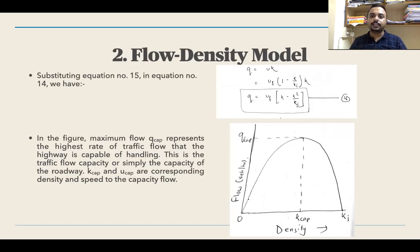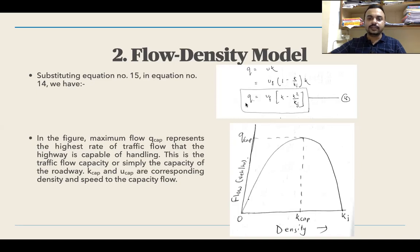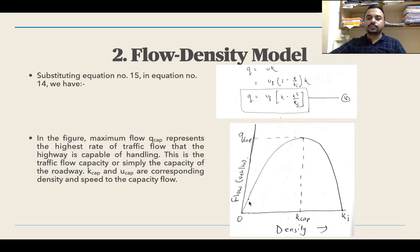For the relation between flow and density, we use the master equation q = u·k and substitute the value of u: u = uf × (1 − k/kj). This gives q = uf·k − uf·k²/kj. This is a parabolic equation because of the k² term. Here uf and kj are constants, while q and k are variables. Flow q is represented on the y-axis and density k on the x-axis.